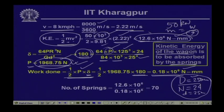Number of springs required = kinetic energy / work done per spring = 12.68×10⁶ / 0.18×10⁶ = 70 springs. So 70 springs are needed so that the wagon can be brought to rest by absorbing the energy imparted.